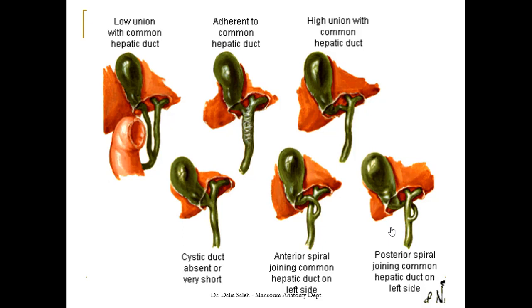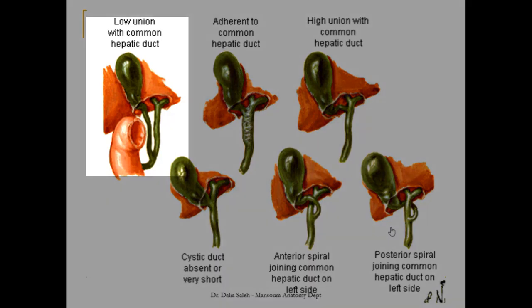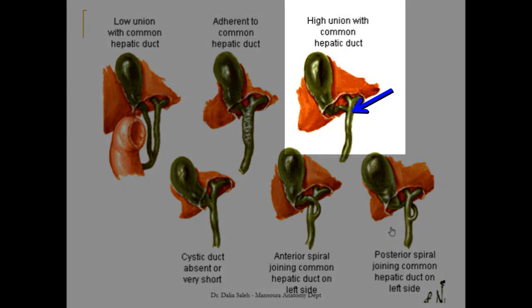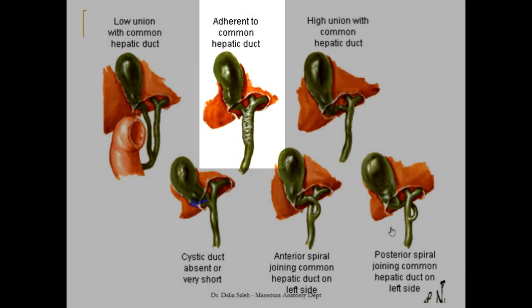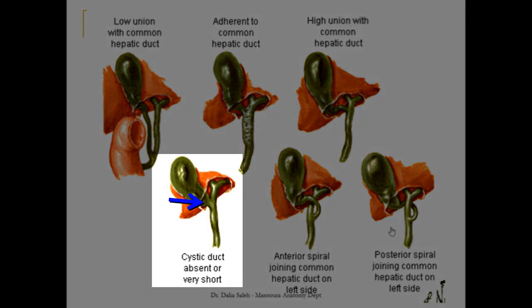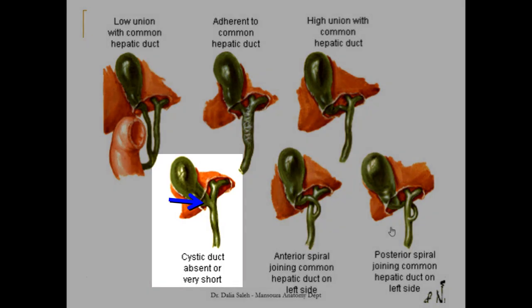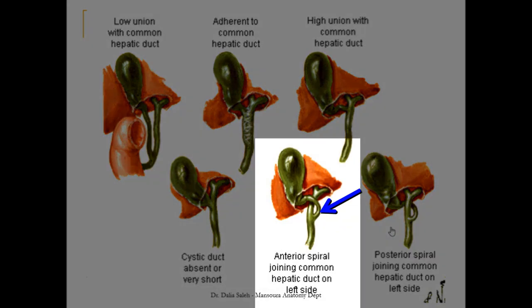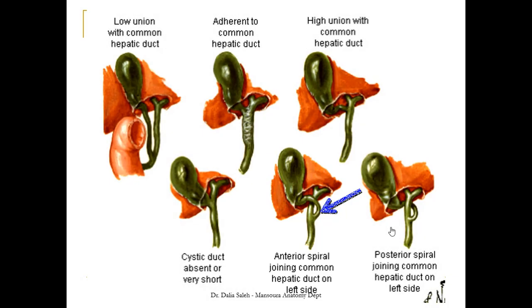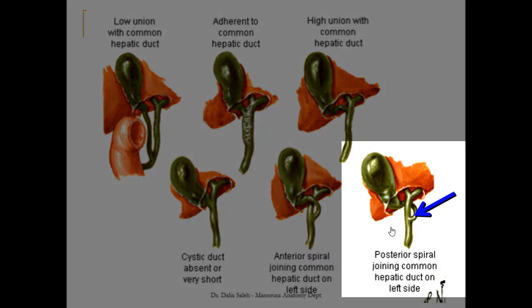We can also have abnormalities regarding the union of the cystic duct and the common hepatic duct. Here we have low union, or here we have high union. Here there is adherence between the common hepatic duct and cystic duct. In this picture, the cystic duct is absent or very short. Here, the cystic duct takes an anterior spiral course to join the common hepatic duct. This spiral course could be reversed, with a posterior spiral course of the cystic duct joining the common hepatic duct from its left side.